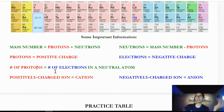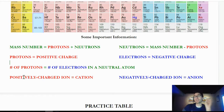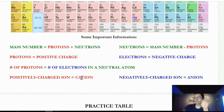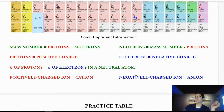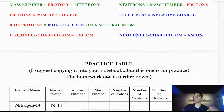Protons are positive, electrons are negative. Regarding ions: if your protons and electrons are equal, you have a neutral atom with no charge. If you have more protons, you have a cation — remember, cat ions have 'paws,' meaning positive charge. Anions are like onions and make you cry — anions are negatively charged due to an extra amount of electrons.